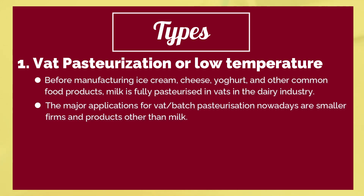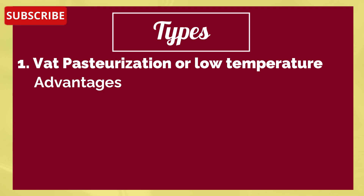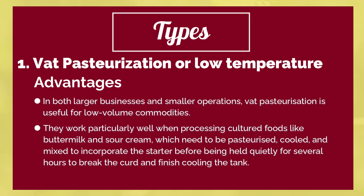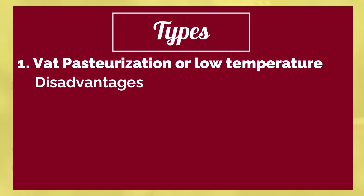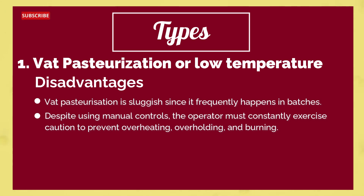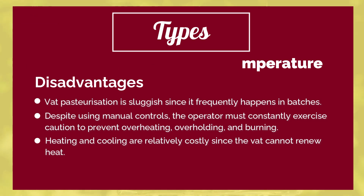The major applications for vat pasteurization nowadays are smaller firms and products other than milk, though large corporations occasionally use it for fruit juices. Advantages include usefulness for low-volume commodities, and it works particularly well for cultured foods like buttermilk and sour cream. Disadvantages include: first, vat pasteurization is slow since it frequently happens in batches; second, the operator must constantly exercise caution to prevent overheating, over-holding, and burning; and third, heating and cooling are relatively costly since the vat cannot renew heat.